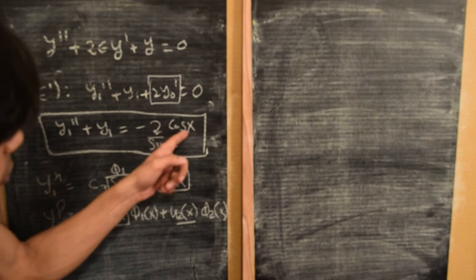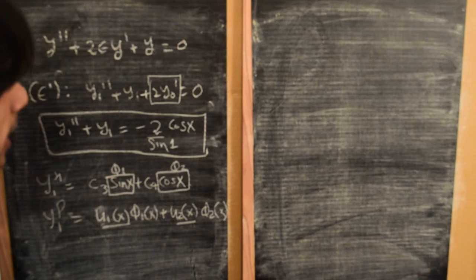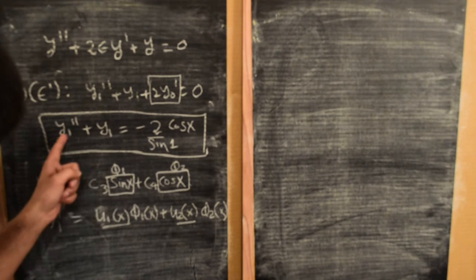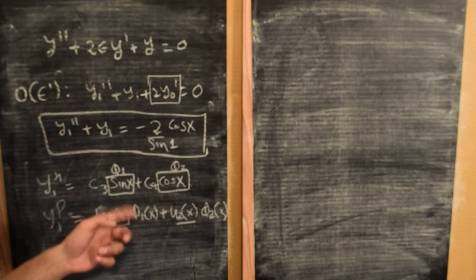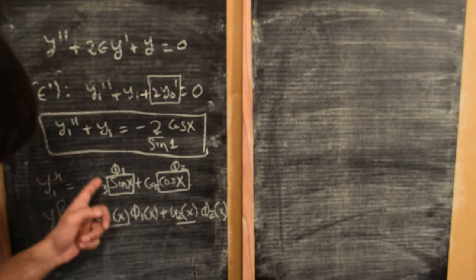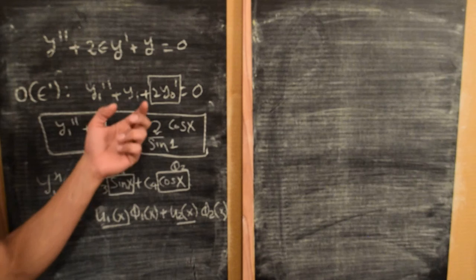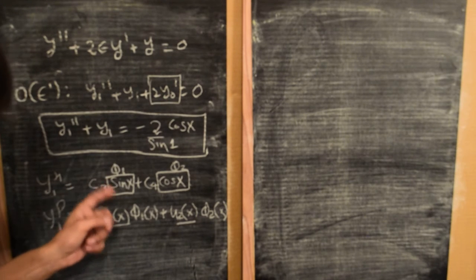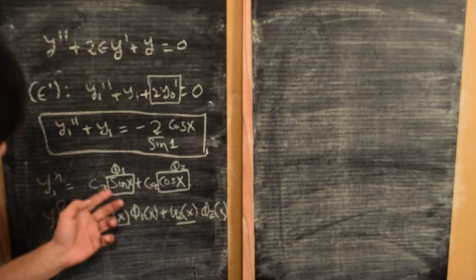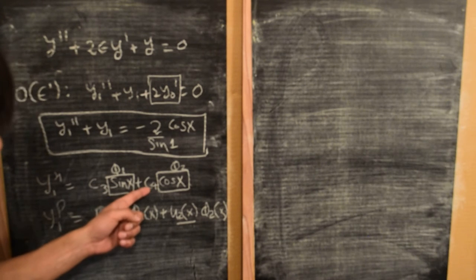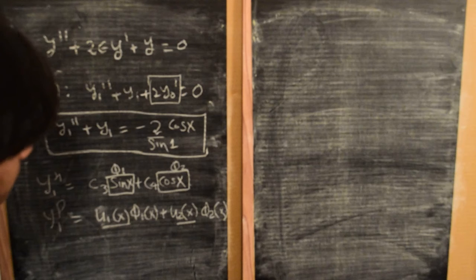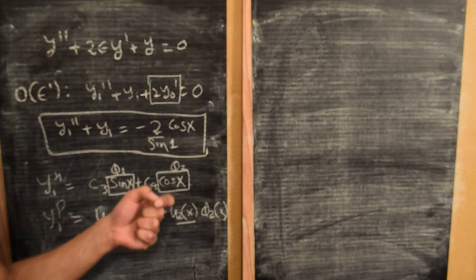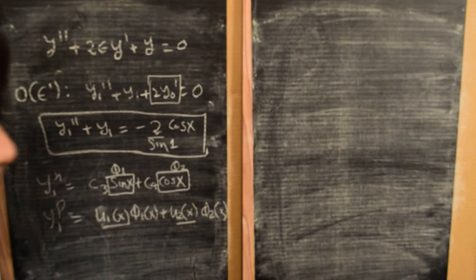The forcing is of the form minus 2·cos(x) divided by sin(1). We know that y₁ will have a homogeneous solution of the same form as that for y₀, which will be c₃·sin(x) plus c₄·cos(x), but it will also have a particular solution coming from the forcing term.